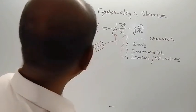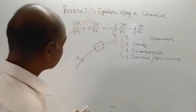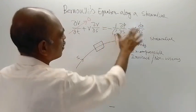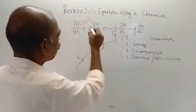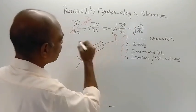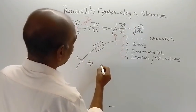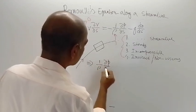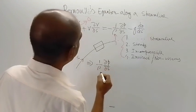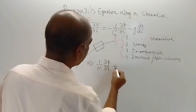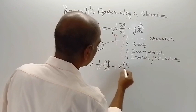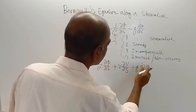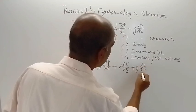By applying these assumptions, the time derivative term becomes zero, leaving three remaining terms. Taking all terms to the left-hand side, we get: 1 by rho del P del S plus V del V del S plus G dz ds is equal to zero.